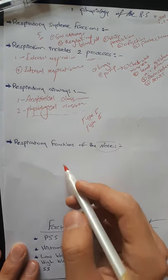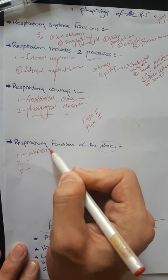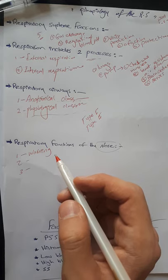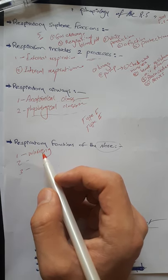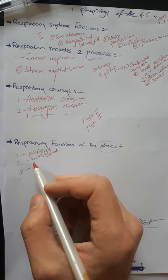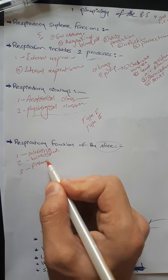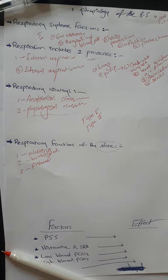The respiratory functions of the nose include three things: first, warming the air by the extensive surface of the conchae and septum; second, the air is almost completely humidified; third, the air is filtered. The nasal filtration is so effective that almost no particles larger than 4 to 6 microns in diameter enter the lung through the nose.